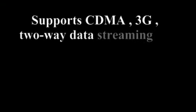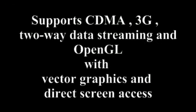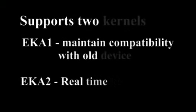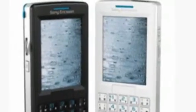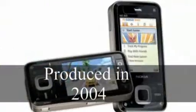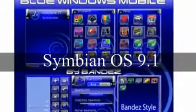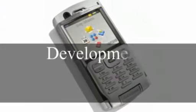After that, Symbian OS 8.0 was released, supporting two different kernels called EKA1 and EKA2. EKA1 was chosen by some manufacturers to maintain compatibility with old device drivers, while EKA2 was a real-time kernel. Symbian OS 9.0 was used for internal Symbian purposes only, produced in 2004. Symbian OS 9.1 and open-source development were released in early 2005.